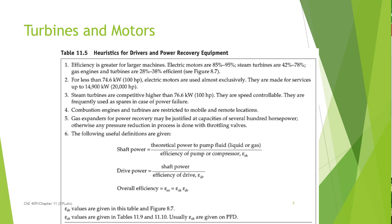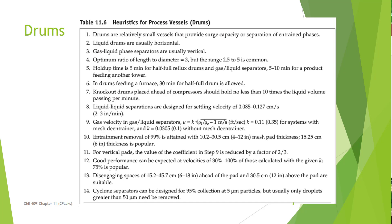Turbines and motors — we don't study those in great depth, but we know that they are not 100% efficient because no device is. They give guidelines of what you should expect as the range of values for those, and how to relate the power that's delivered to a fluid compared to shaft power compared to drive power, because each of those has an efficiency. There's a loss of mechanical energy, and so that overall efficiency is going to be a product of the shaft power efficiency and the drive power efficiency.